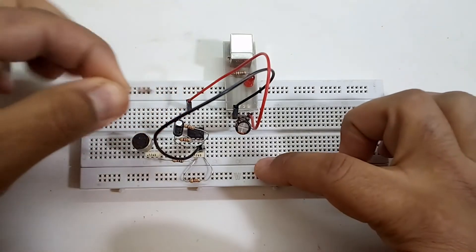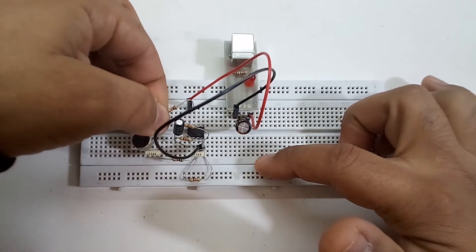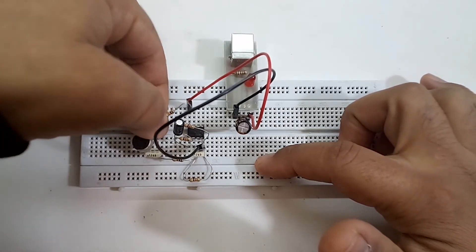After that we connect a 10k resistor between pin 8 of the op amp and the positive terminal of the microphone.